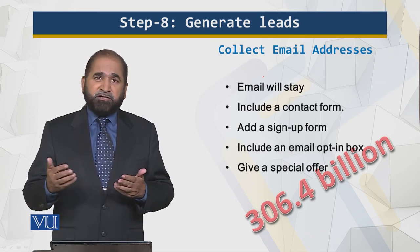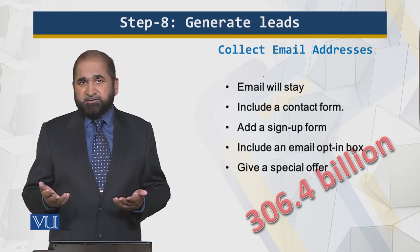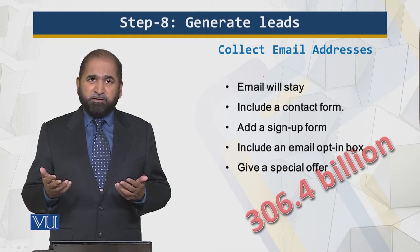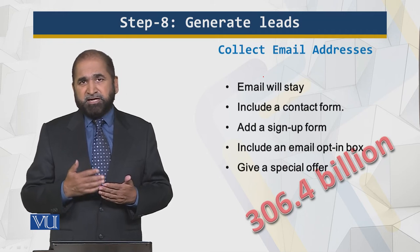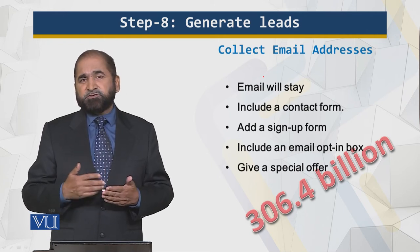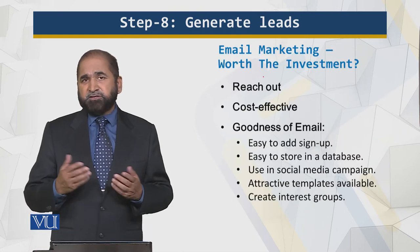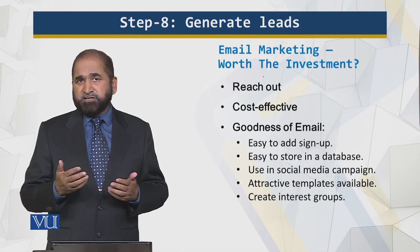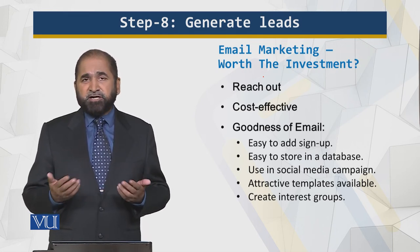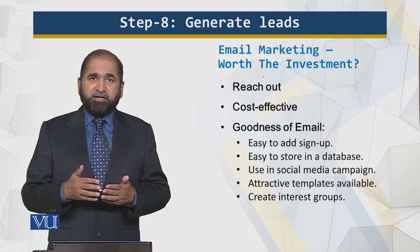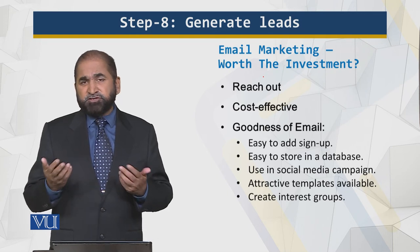I gave you the example that some people are looking for something which is not available, but when it becomes available you send them a notification — like a job. People register for a job and when you have a job on your job site that meets and matches their credentials, you send them an automatic email. Email outreach is very cost effective — it doesn't cost a lot of money. The goodness of email: it is easy to store in a database and easy to generate messages pulling email addresses from the database in a social media campaign.